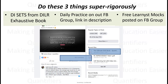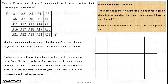There are 25 doors named A1 to A25 and numbered 1 to 25, arranged in the form of a 5×5 square grid as shown below. The doors are numbered in such a way that the sum of any row or column is the same.